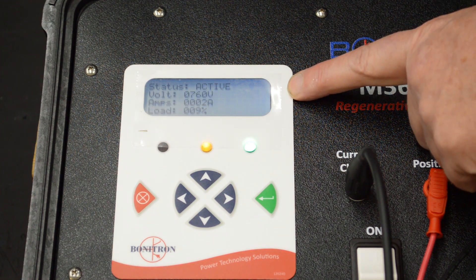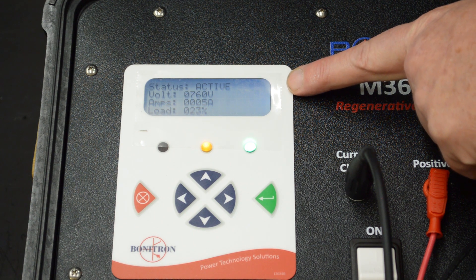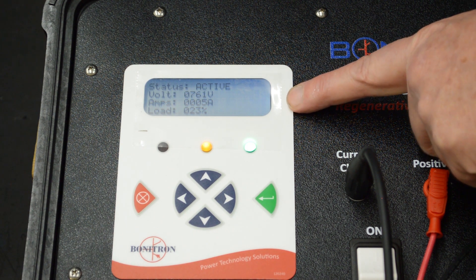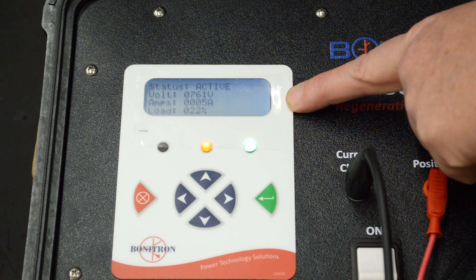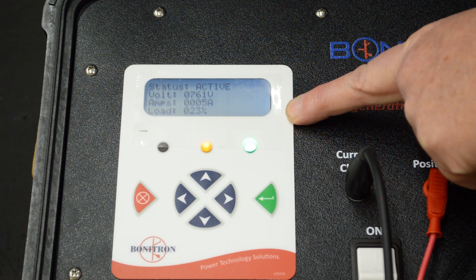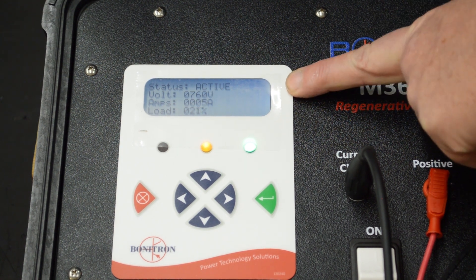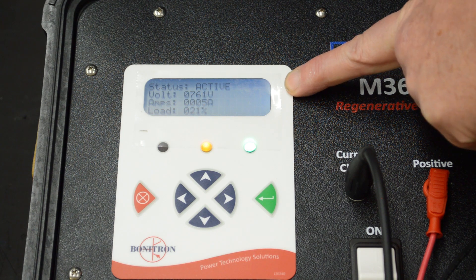As you can see, the parameters of the regen come up right now. We have a 760 volt DC bus, 5 amps, and the load's at 23%. And right now we're doing, we would be braking.